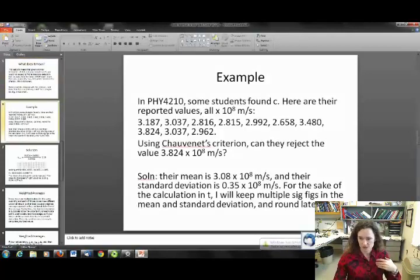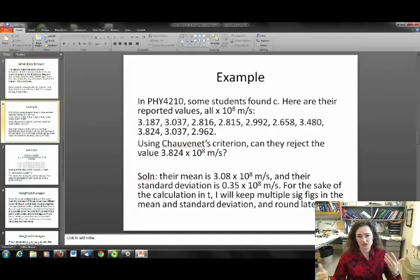So here's an example of Chauvenet's criterion. Let's say that this is data that I took from a real 4210 experiment, senior seminar, where they were measuring the speed of light C. And they found 10 different measurements for C. And here they are, all times 10 to the eighth meters per second. Using the criterion, can they reject the outlying value, 3.824 times 10 to the eighth meters per second, as detailed here? So first of all, they found their mean. You just added up all those values and divided by 10 to find the mean, and that's 3.08 times 10 to the eighth meters per second. And then they found the standard deviation, just like you would find the standard deviation as I outlined in a lecture a couple of weeks ago. It was 3.08 plus or minus 0.35 times 10 to the eighth meters per second for the value and standard deviation.